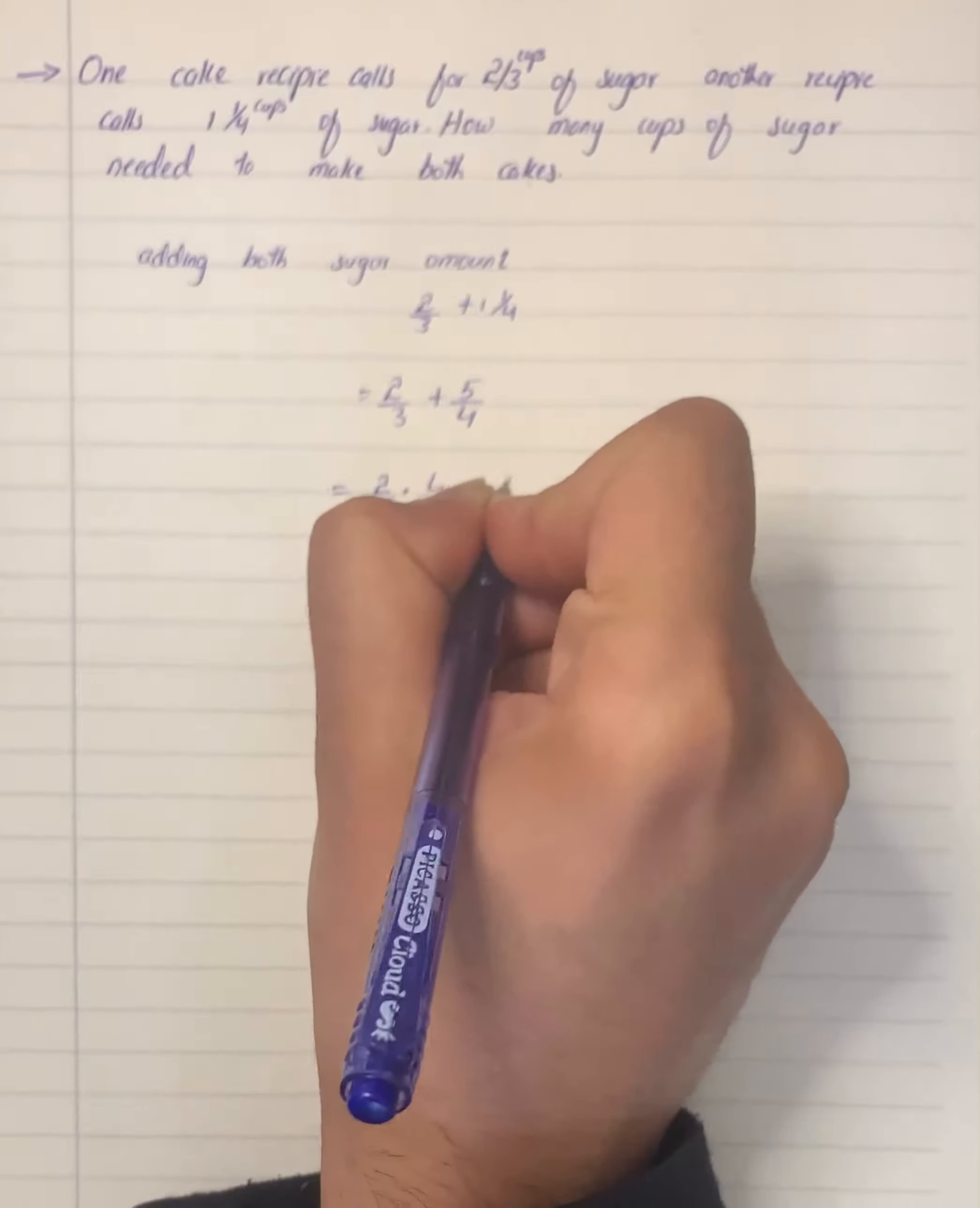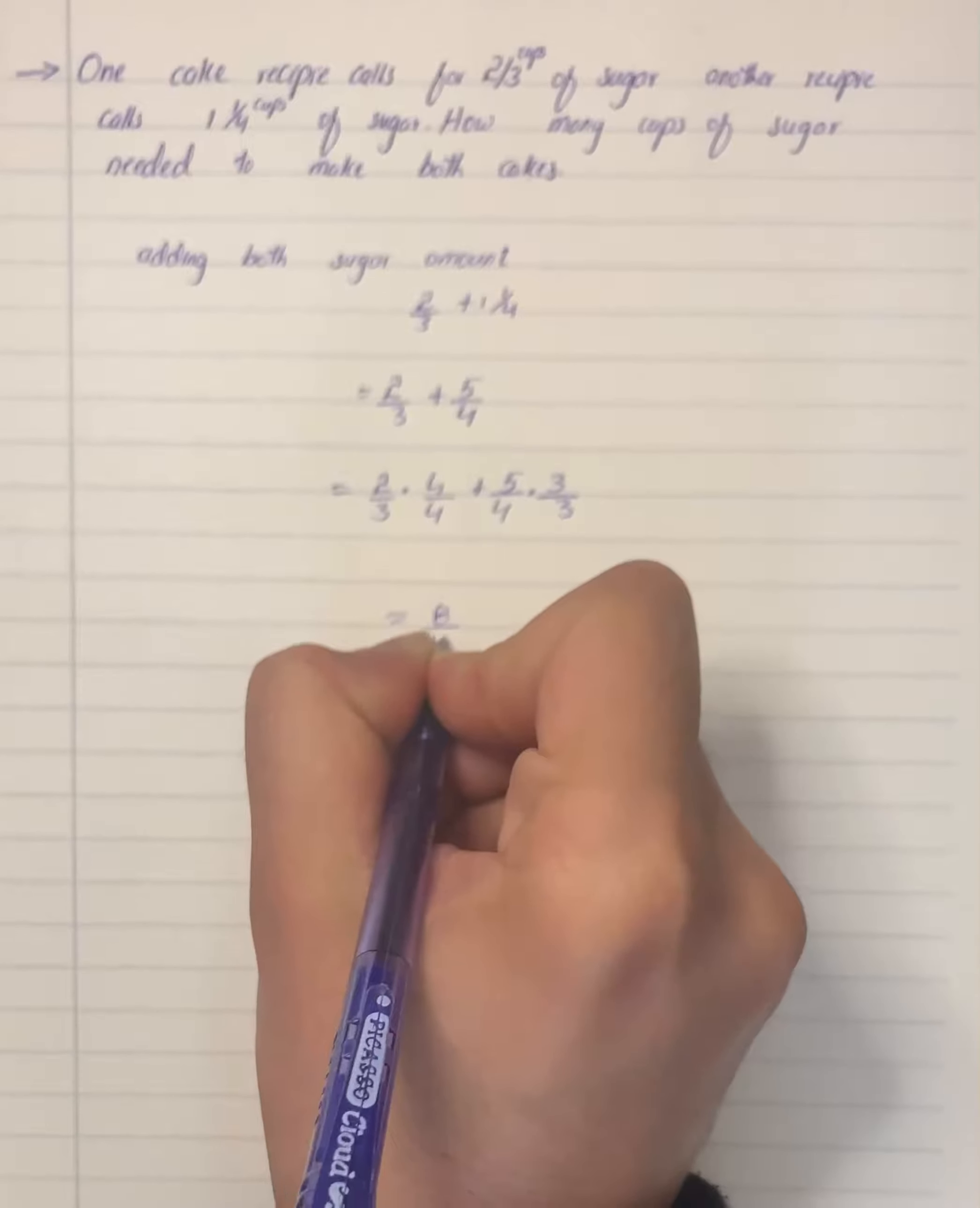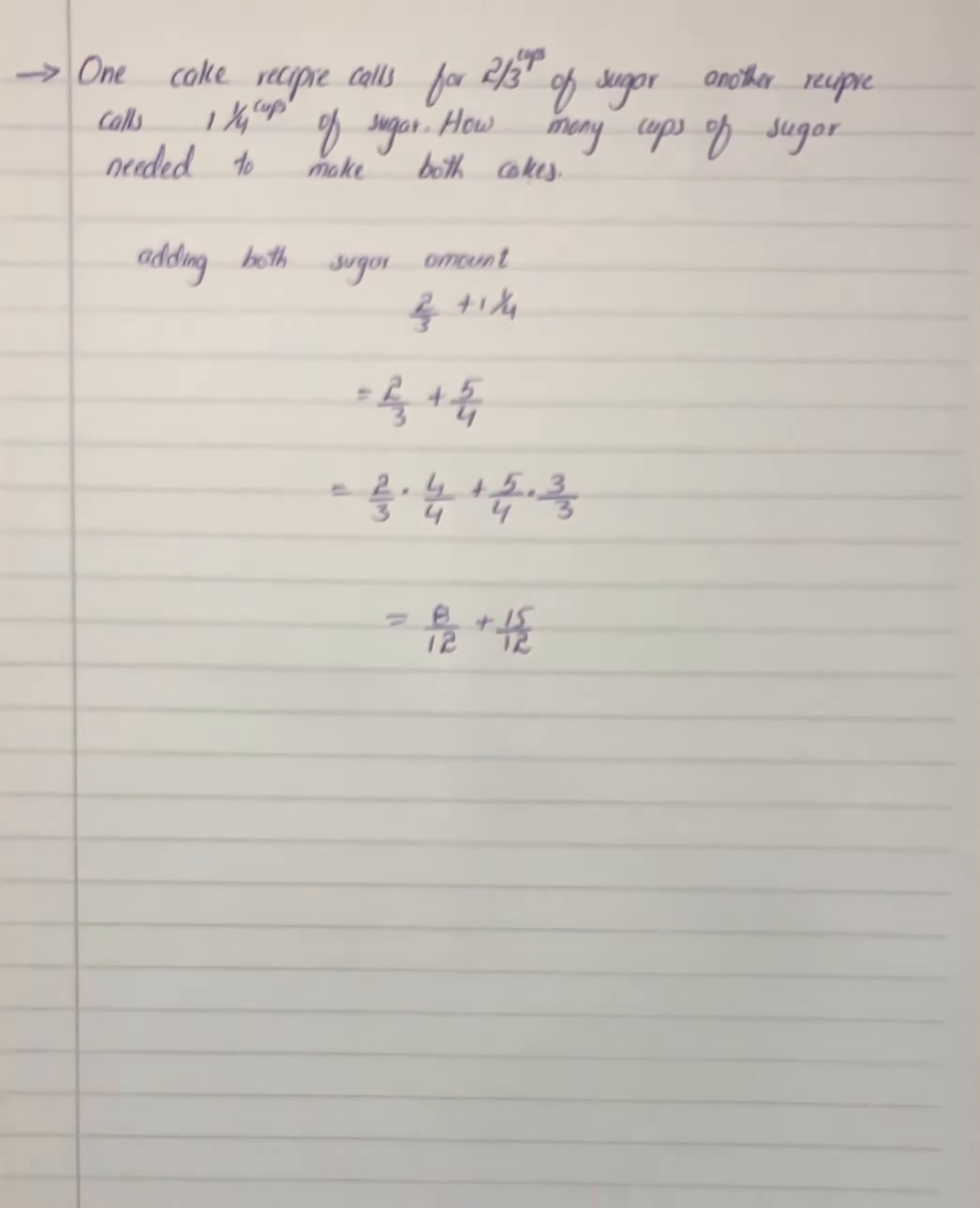So it will give us two by three times four by four plus five by four times three by three. It becomes eight by twelve plus fifteen by twelve.